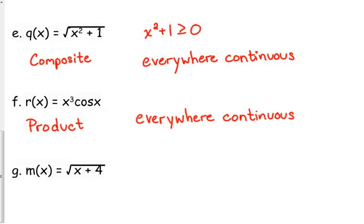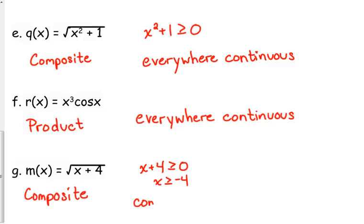Last one: another square root. Technically this is another composite function, plugging x + 4 into the square root of x. Our concern is what's under the radical — is it greater than or equal to zero? That happens when x ≥ -4. So this function is continuous for [-4, ∞). Anything less than -4, it doesn't exist, so it can't be continuous if it doesn't exist.